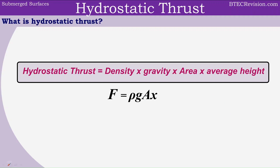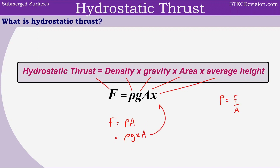Next, we can look at hydrostatic thrust. Hydrostatic thrust is equal to the density times gravity times area times average height, and the short form is F equals rho g a x, where F is hydrostatic thrust, rho is density, g is gravity, a is area, and x is average height. This comes from the fact that pressure equals force divided by area, so force equals pressure times area. Using our hydrostatic pressure equation rho g x and multiplying by area gives us the hydrostatic thrust equation.